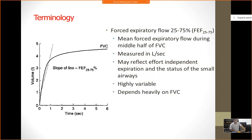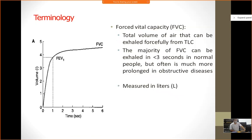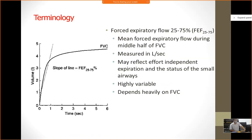FEF 25-75 is the mean forced expiratory flow during the middle half of the forced vital capacity. The slope of the line in the graph represents FEF 25 to 75 percent. This is effort independent — whereas FEV1 and FVC are effort dependent. It is important because it shows the status of the small airways. It is highly variable but depends largely on the FVC. We use this parameter to measure small airway function.